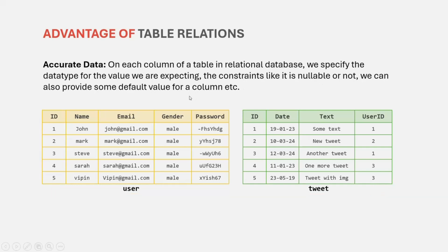Another advantage is that on each column of a table in a relational database, we specify the data type for the value we are expecting, and also constraints like whether that column should be nullable or not, and we can provide default values. For example, in the name column, when we specify its data type as string, only string values can be inserted. If we try to insert a numeric value or a date value, the database will throw an error. So once we specify the data type and constraints, only valid values can be inserted, and we will always have accurate data.